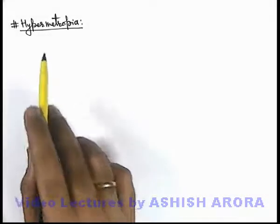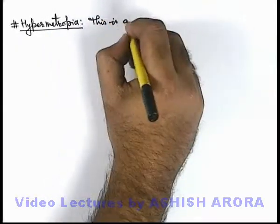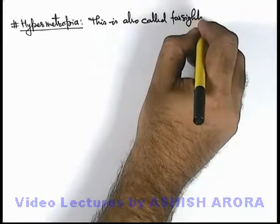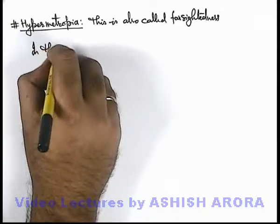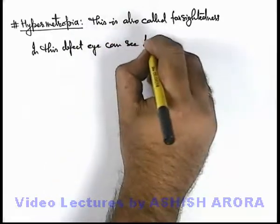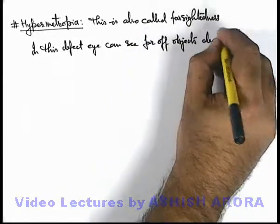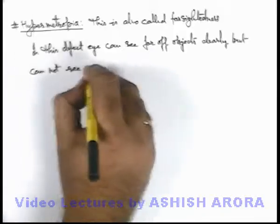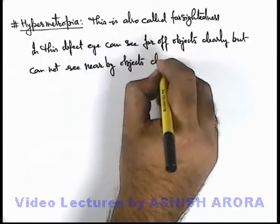Let us now study about another eye defect — hypermetropia. This is also called farsightedness. In this defect, the eye can see far off objects clearly, but cannot see nearby objects clearly.